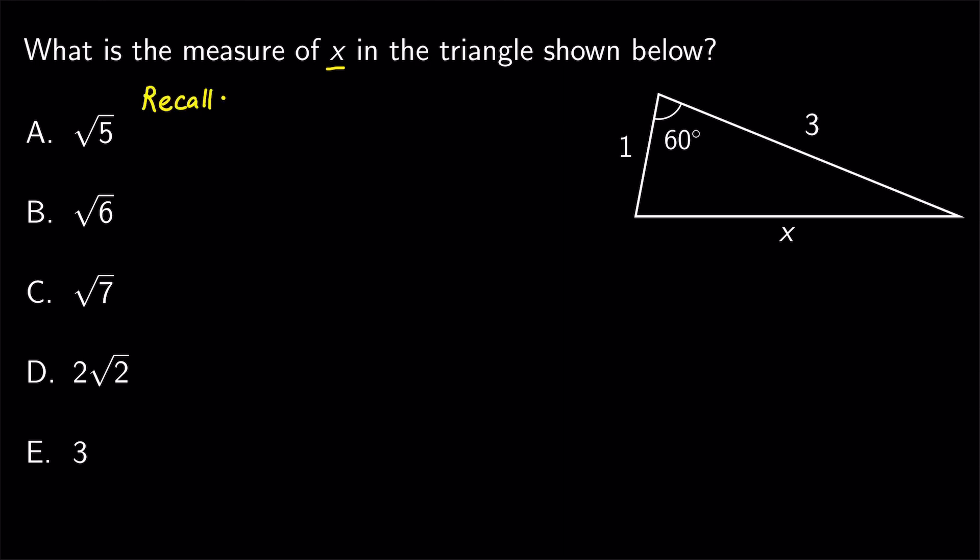Well, to solve this problem, we apply the law of cosines, which says that in a general triangle with sides a, b, c, and a given angle alpha, the following relation holds: a squared equals b squared plus c squared minus two times bc times cosine alpha.